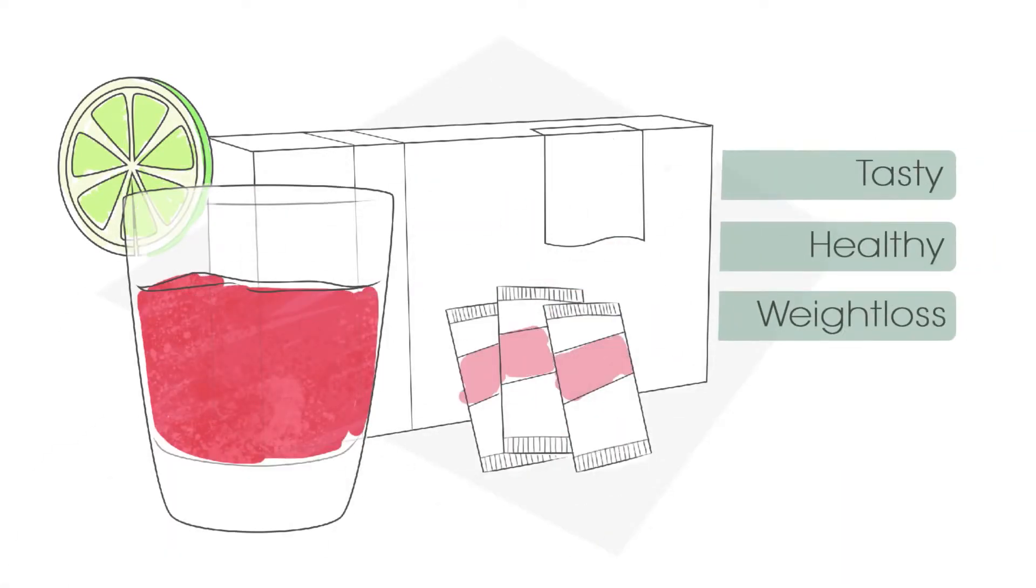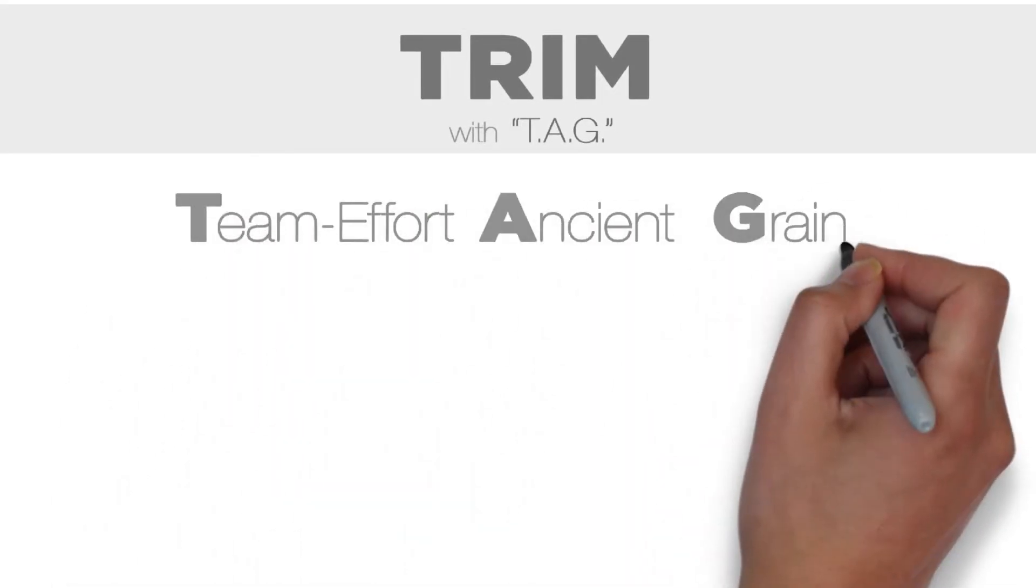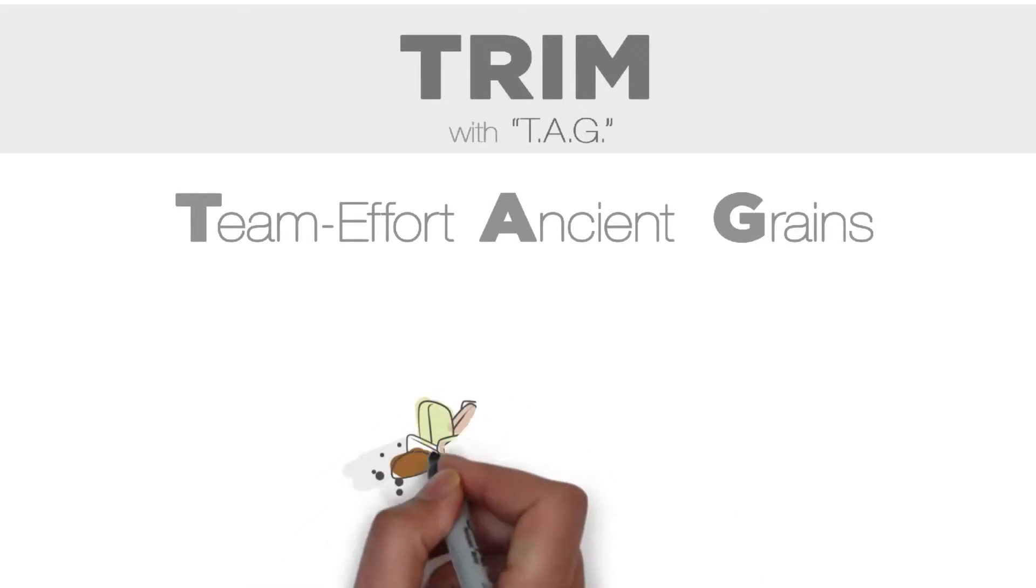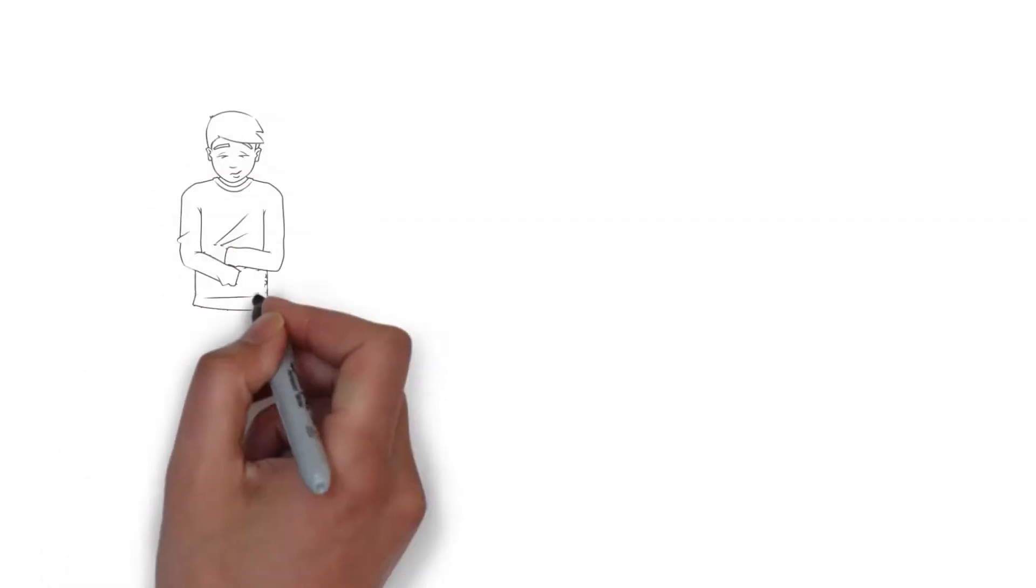The tasty, healthy weight loss drink. Trim has something you won't find anywhere else: tag team effort ancient grains. TAG is an exclusive blend of the world's most powerful super grains with incredibly healthy and natural ingredients.